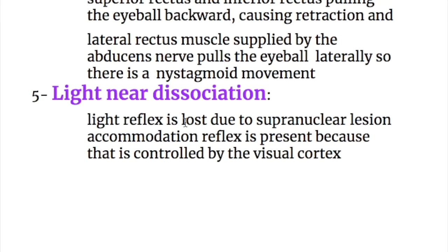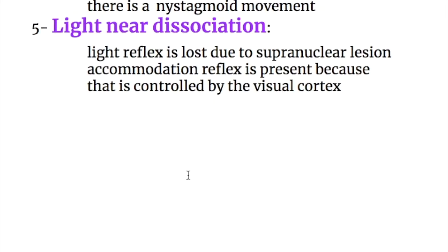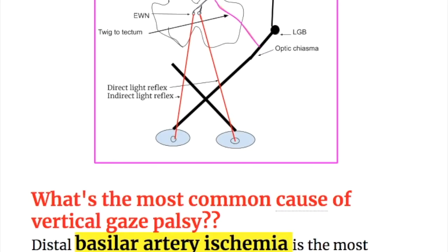Sign number five is light-near dissociation. The light reflex is lost due to the supranuclear lesion, but the accommodation reflex is present because it is controlled by the visual cortex. The optic tract gives a twig to the tectum; the tectum is destroyed, which gives a bilateral twig to the Edinger-Westphal nucleus, so damage to the tectum causes loss of the light reflex in this case.